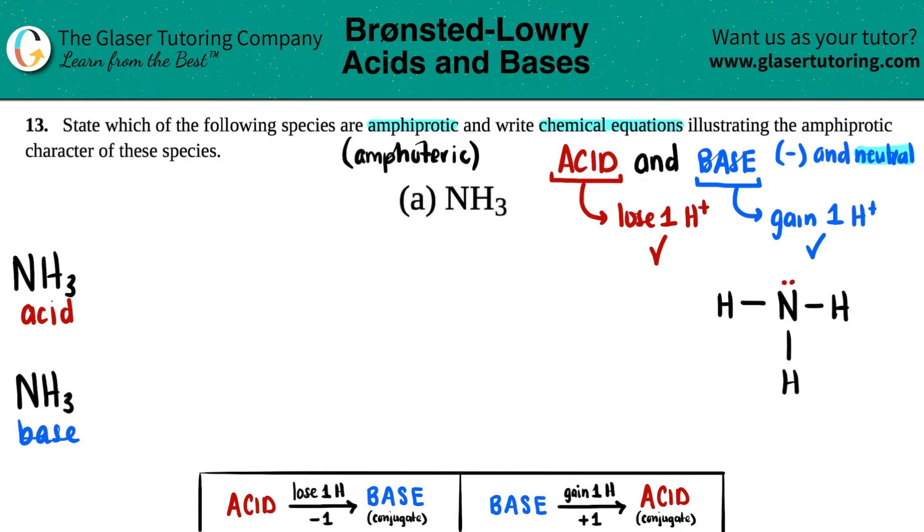Remember, if you're doing acid-base reactions and you're starting with an acid, you have to react it with a base. You cannot have two acids reacting together or two bases reacting together. On the flip side, if it's acting as a base, you have to add some type of acid. We won't do equilibrium here - we'll just say this is what happened.